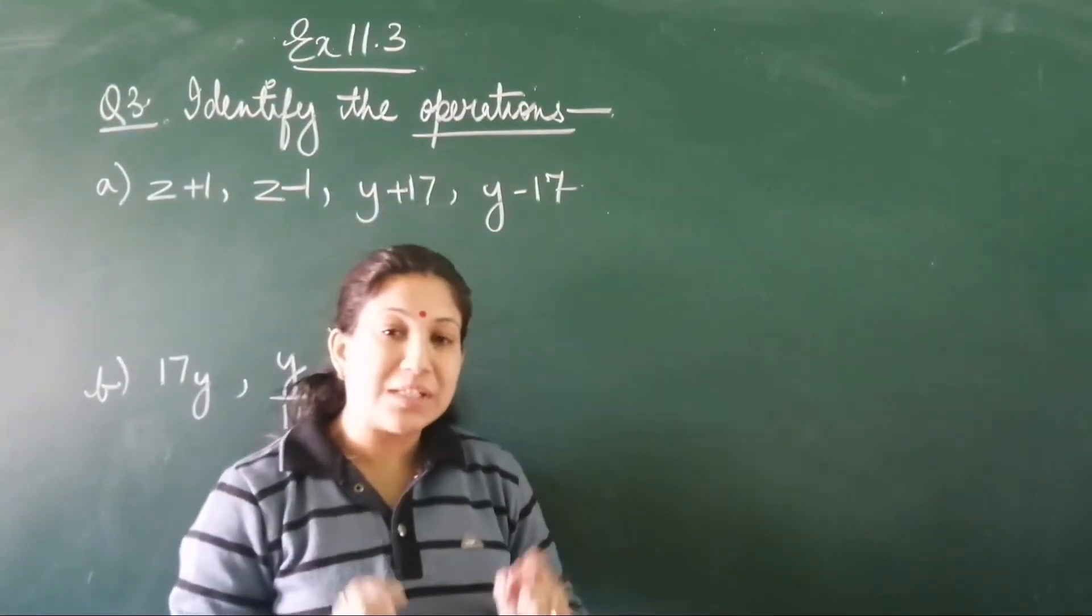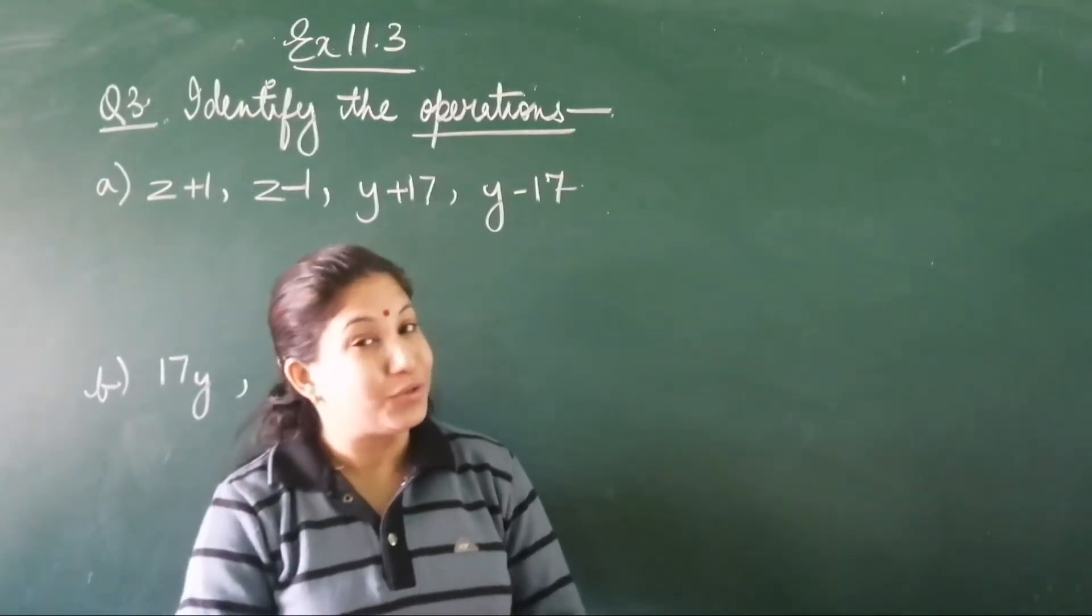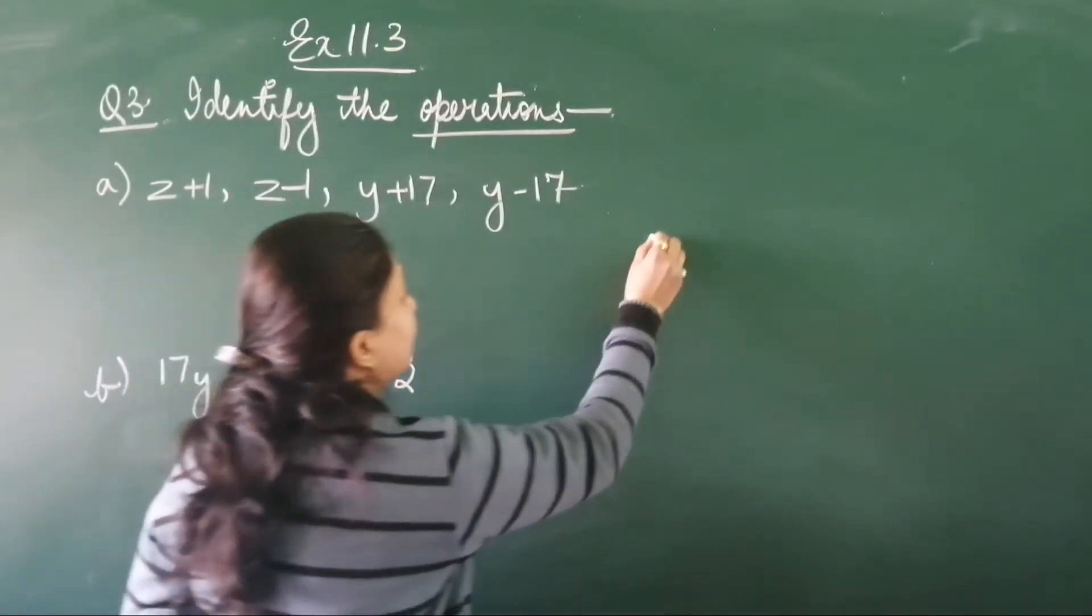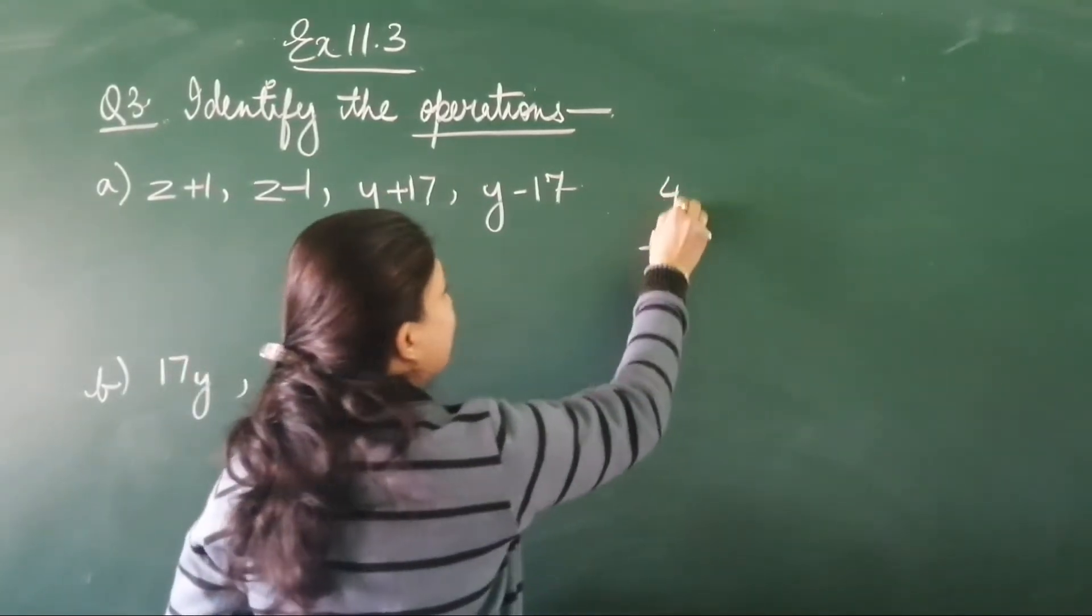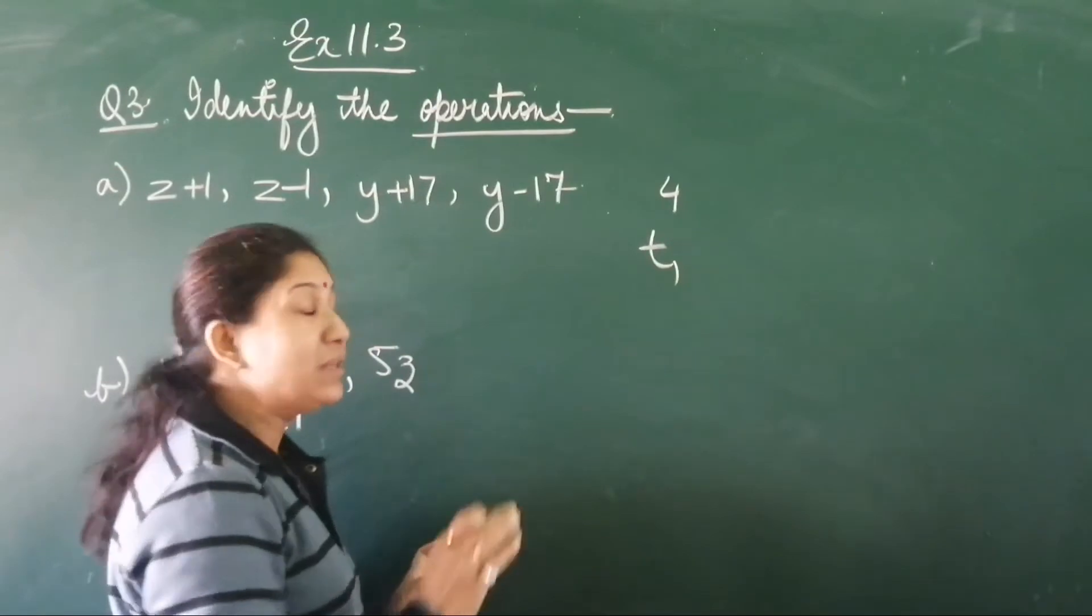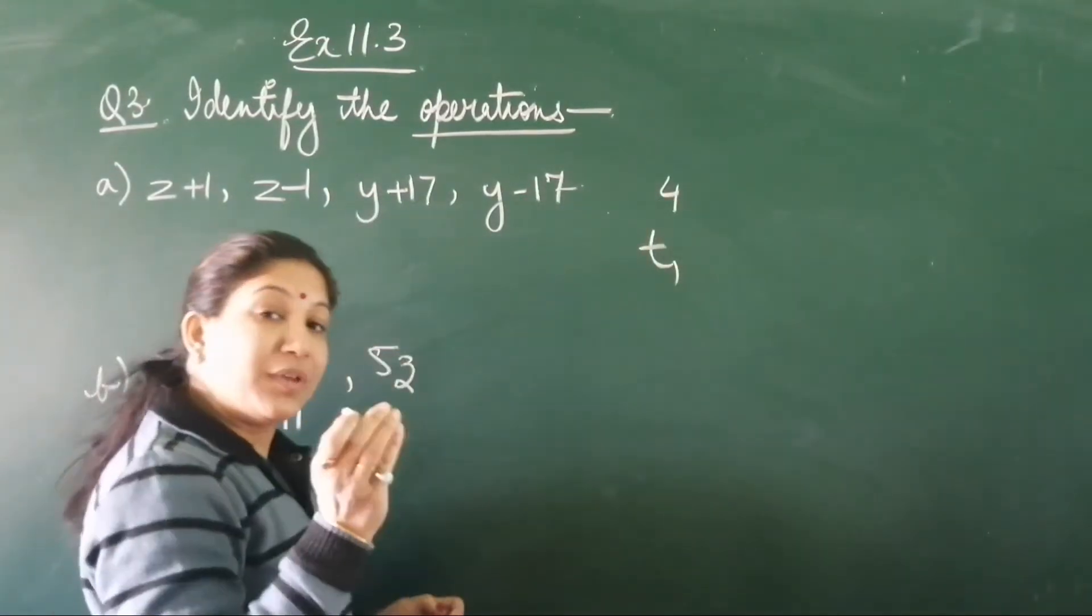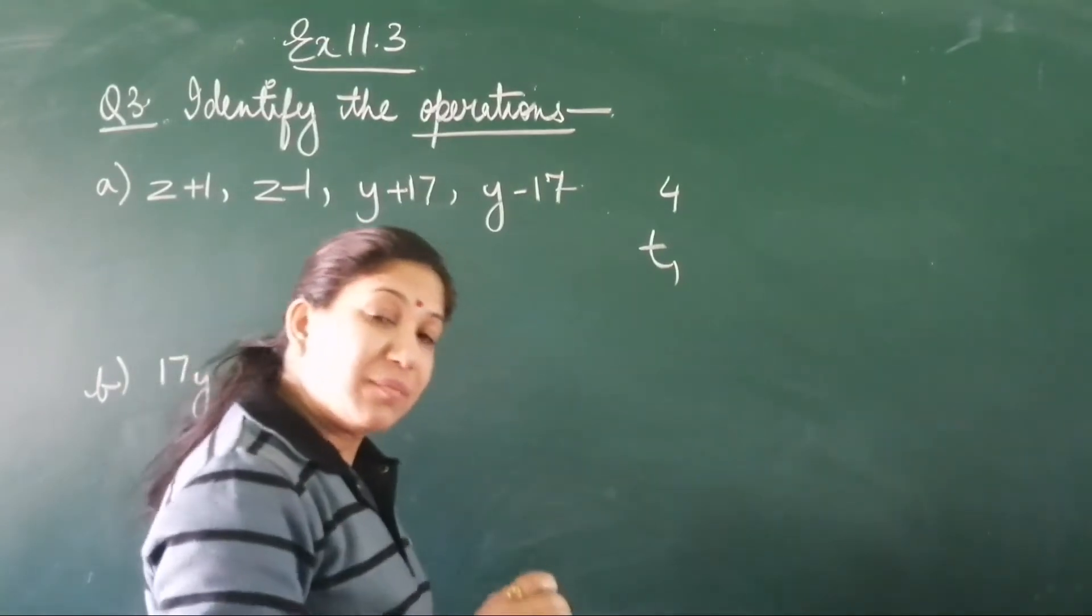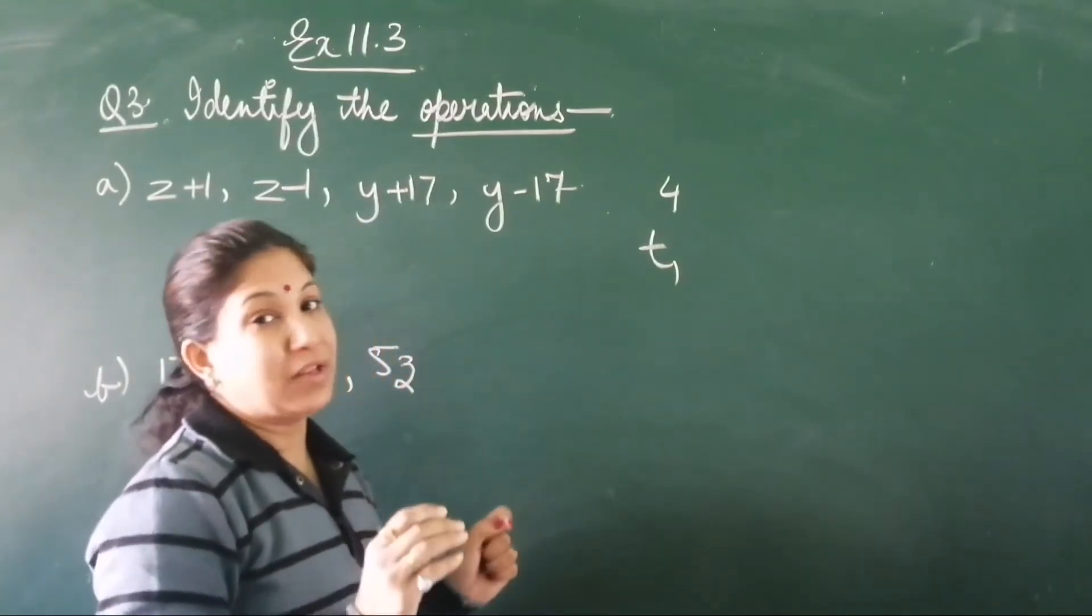When we were discussing expressions, I told you that when we include many terms together - take for example 4, 4 is a constant, but I'm not including any variable with 4. So we can have terms only with variables, only with constants, or with constant and variable both.